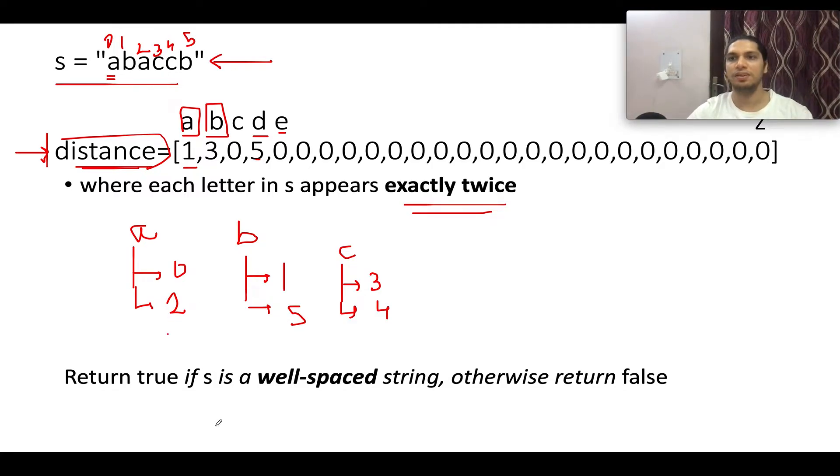Once we have calculated the indices at which each character occurs, now comes the validation part. So let's start the iteration across the expected distance array. The expected distance array for the character A is 1. What do we do? Since we are at character A,